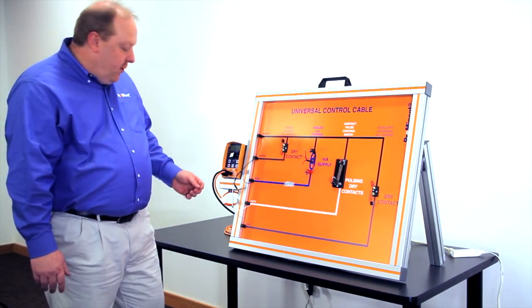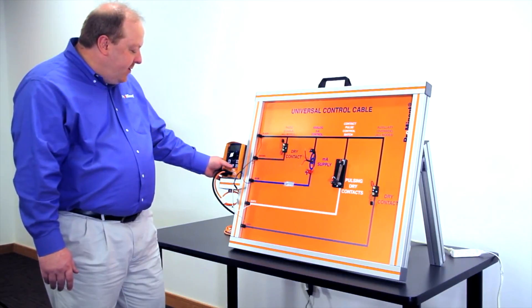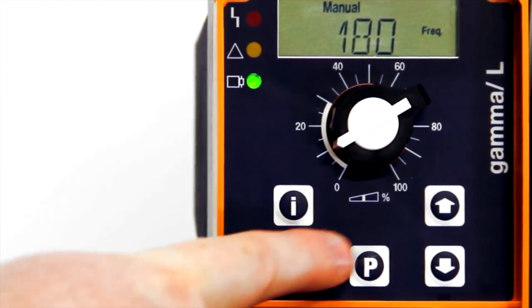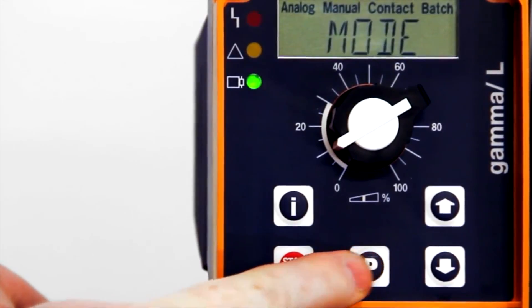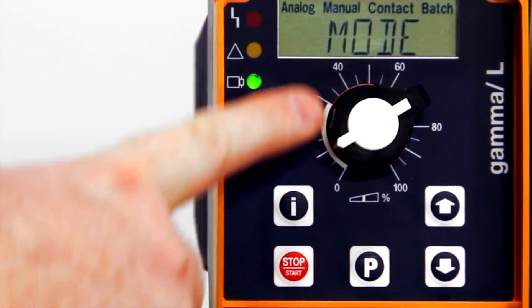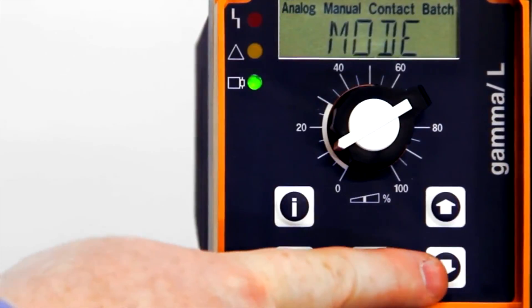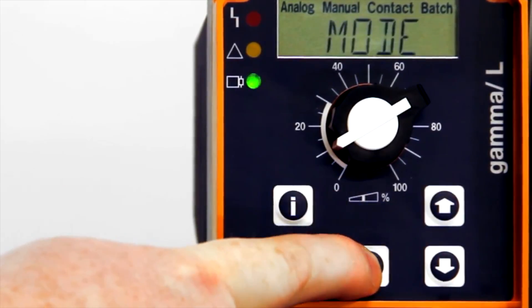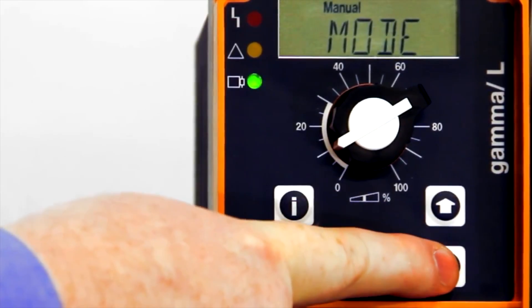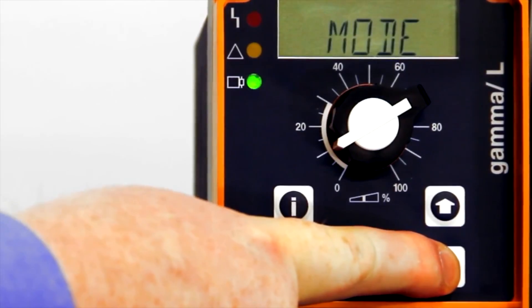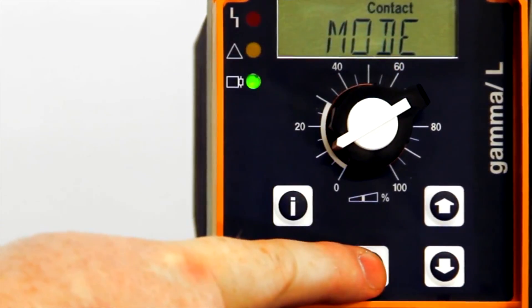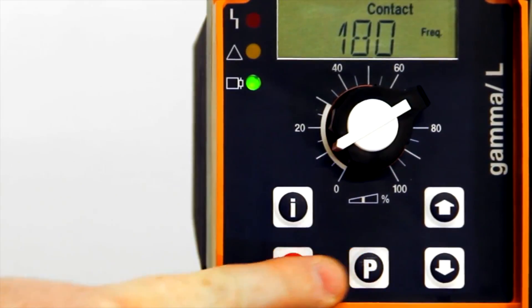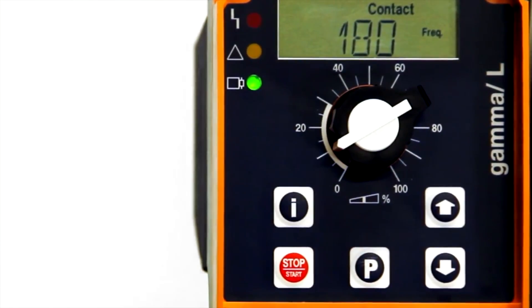The next mode of operation is the contact mode. To program the pump to contact mode, press and hold the P key, then look for the word mode with the up or down arrow buttons. Once mode is flashing, press the P key again quickly. Now scroll with the up or down arrow button until the word contact flashes. Press the P key once. Now the pump is in contact mode of operation.